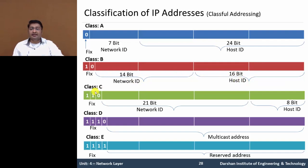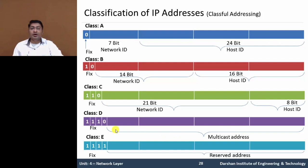In Class C, the first 3 bits of the first octet are fixed as 1, 1, 0. The remaining bits in the first, second, and third octets — 21 bits — form the Network ID, and 8 bits are used for the Host ID. In Class D, the first 4 bits are fixed as 1, 1, 1, 0. The remaining bits are used for multicast addresses, so Class D IP Addresses are used for multicasting.